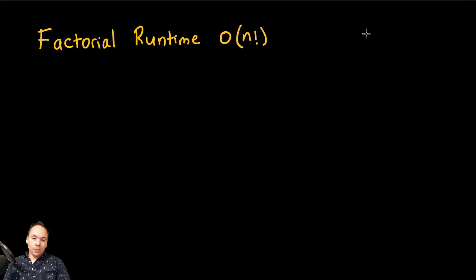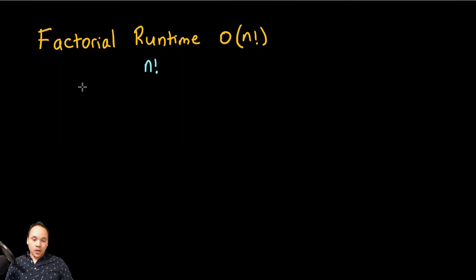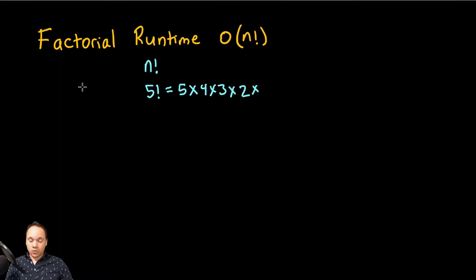In this section we're going to talk about factorial runtime. Factorial is represented by the exclamation mark, and what it means is that you have to multiply all the numbers backwards down to one. So if you have factorial 5, it means 5 by 4 by 3 by 2 by 1. The same if you have factorial 3.